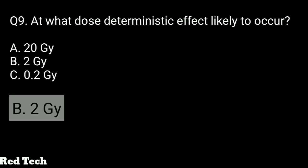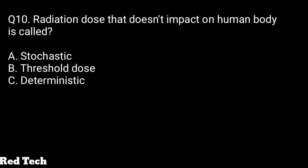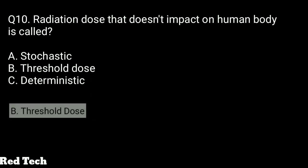Question number ten: the radiation dose that doesn't impact the human body in a harmful way is called what? Options: stochastic, threshold dose, or deterministic. The answer is threshold dose — if radiation below the threshold dose is received, it will not affect us harmfully.